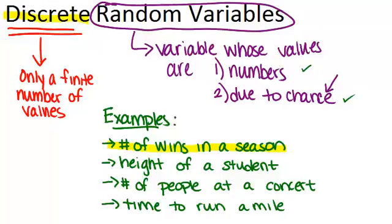What about the number of people at a concert? That also is a discrete random variable because there's only a finite number of people that there could be, and there can't be half people. So there's either zero people, one person, two people, all the way up to the max number of people that could attend if it was sold out. You could list out all those possible values, so it's a discrete random variable. Finally, the time to run a mile would not be discrete because, just like the height of a student, there are an infinite number of times — even between 0 minutes and 20 minutes, if you think about seconds and milliseconds and so on. Time is a continuous value, so it's not a discrete random variable.